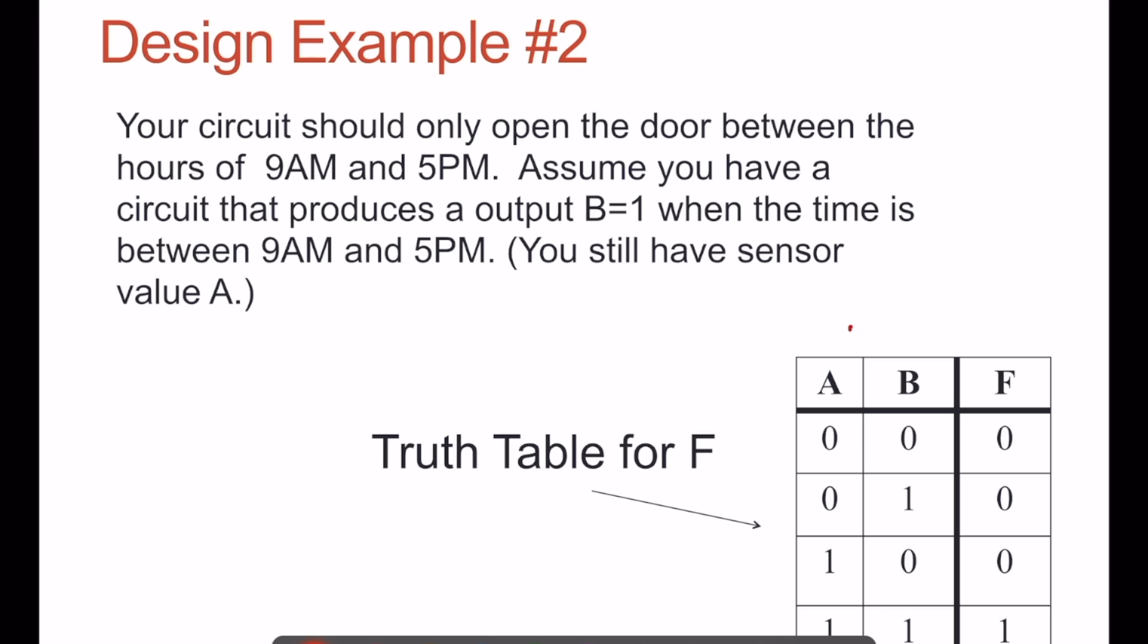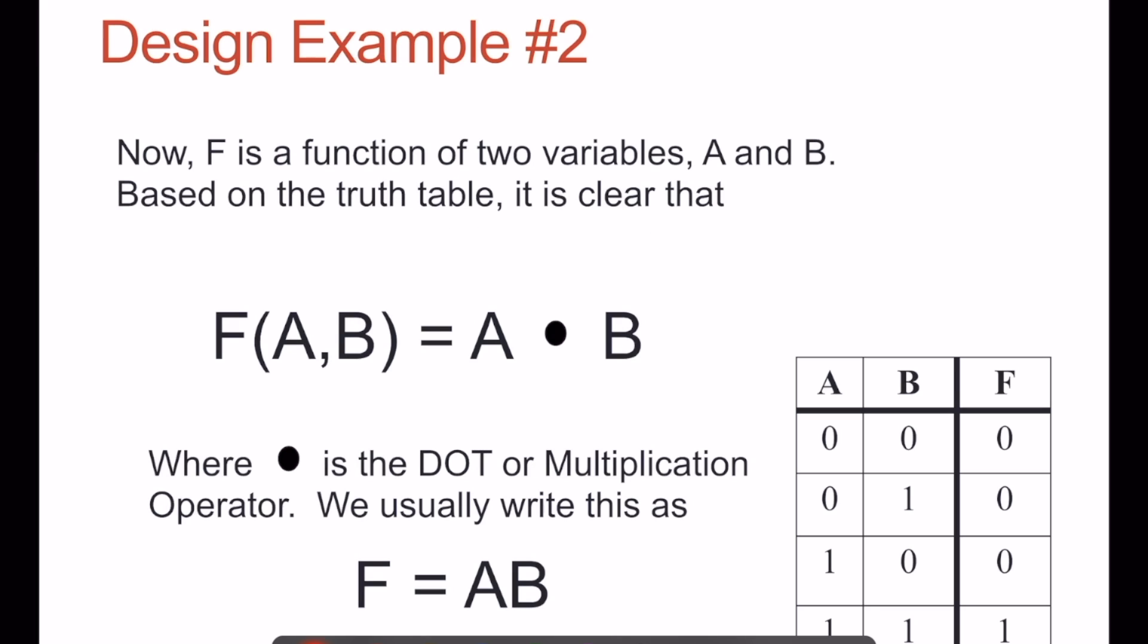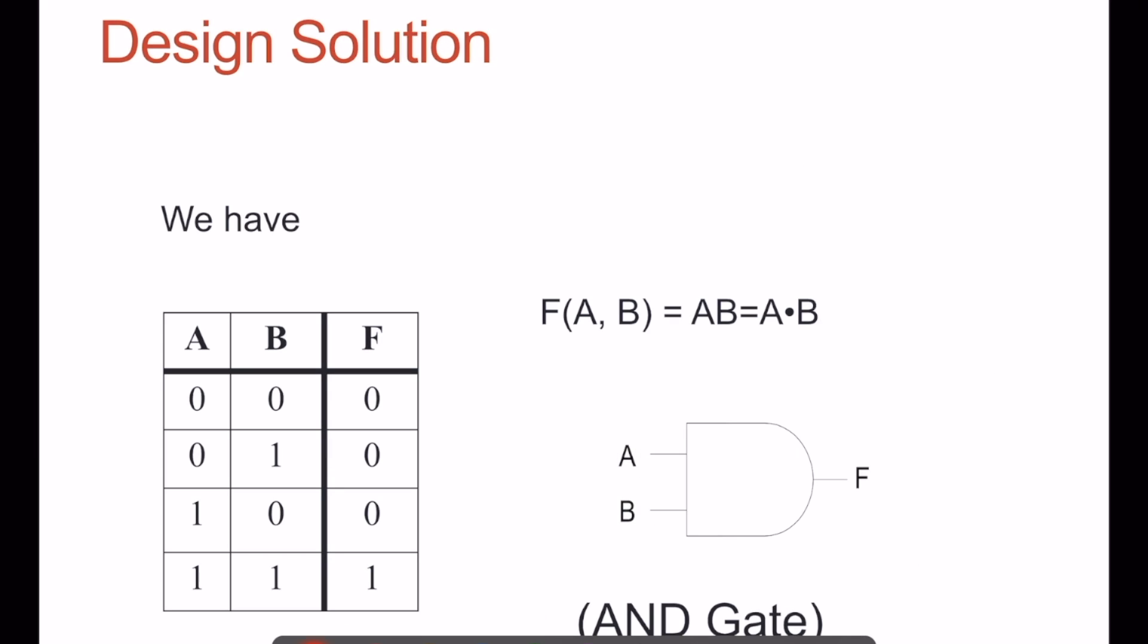You should maybe recognize this as an AND truth table. This could be implemented using the Boolean algebra expression F is equal to A ANDed with B, and we can implement this with an AND gate.